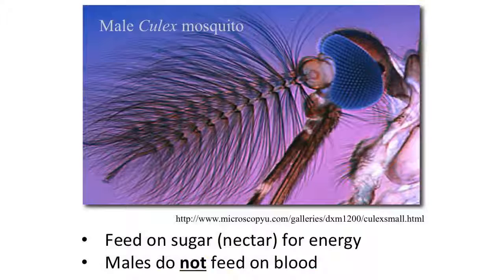Then of course we have males and females. You can tell males and females apart just by looking at their antennae. This is a male mosquito - he's got these huge plumose antennae, really, really bushy. He uses those to listen for the wing beat frequency of conspecific females, so he can hear if there's a female of his species flying around. Males are really nice - they don't feed on blood at all. They don't have functional mouth parts to do any blood feeding. They essentially just sip on some sugar meals to get energy for flight, find females to mate with, and then they're done.